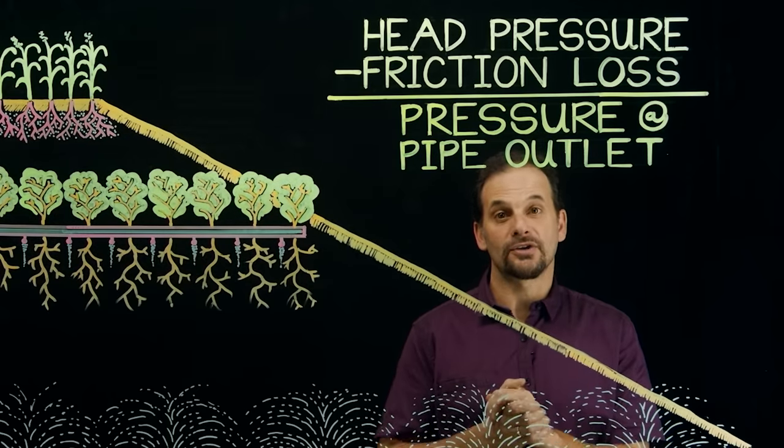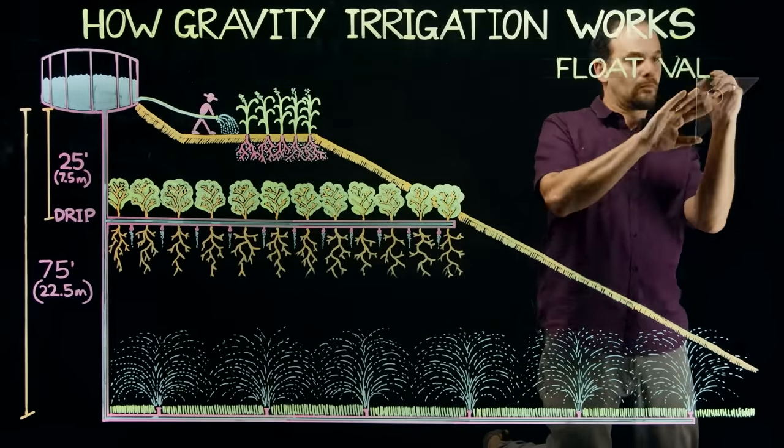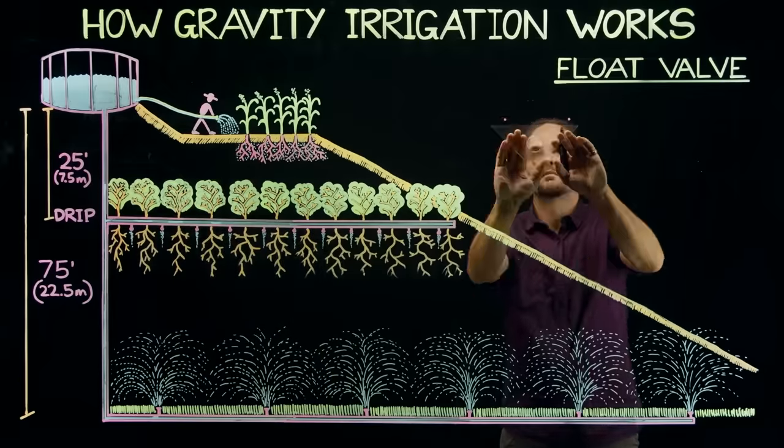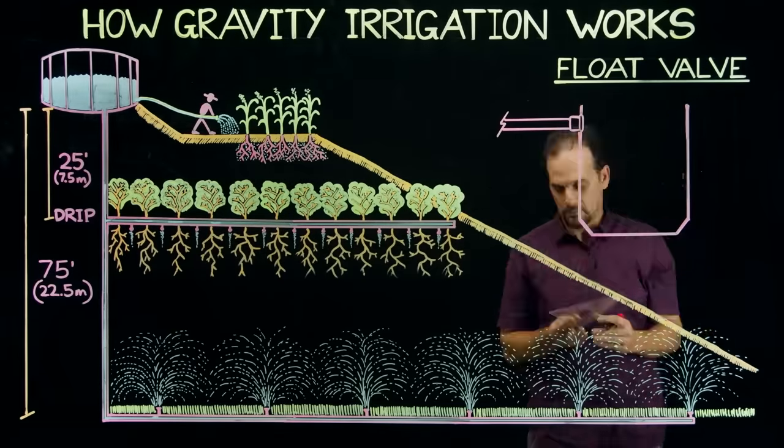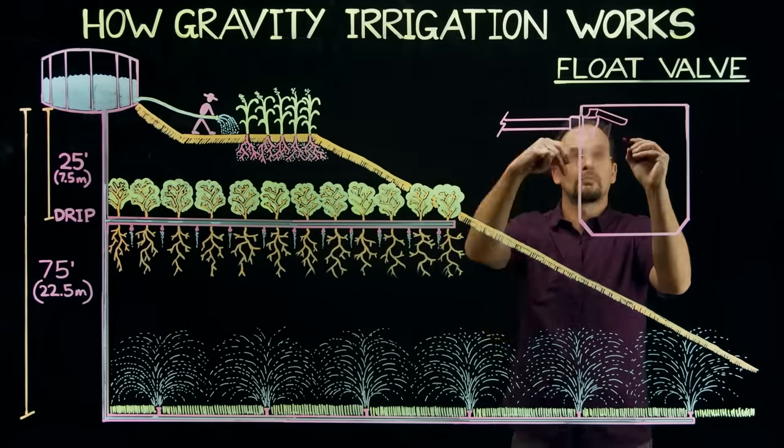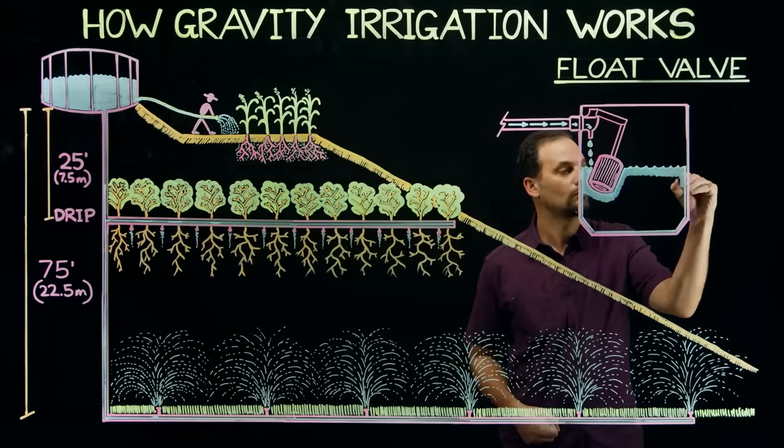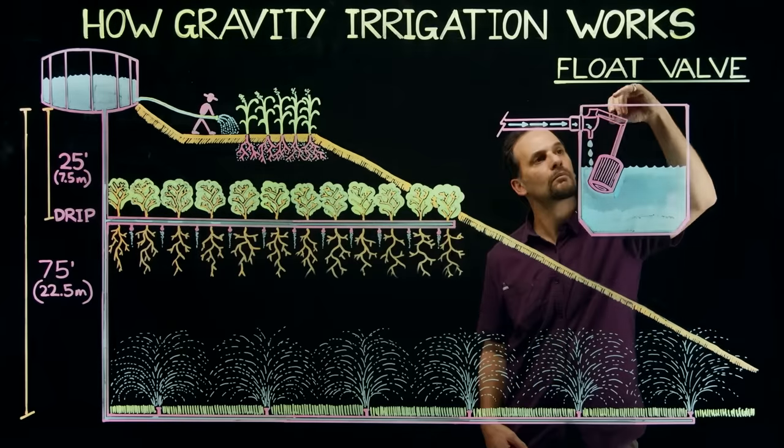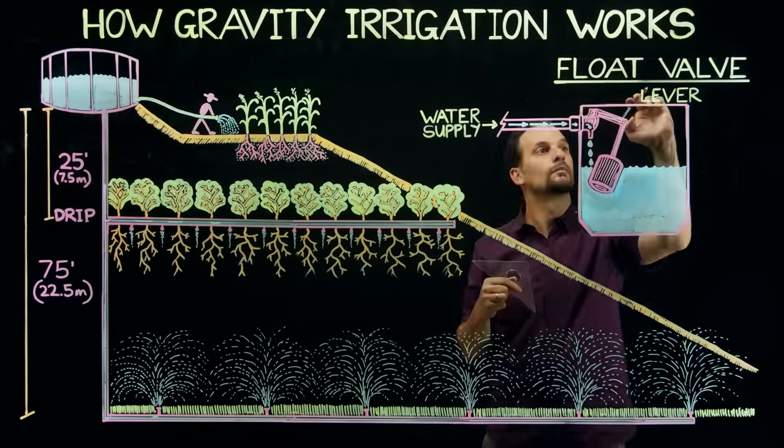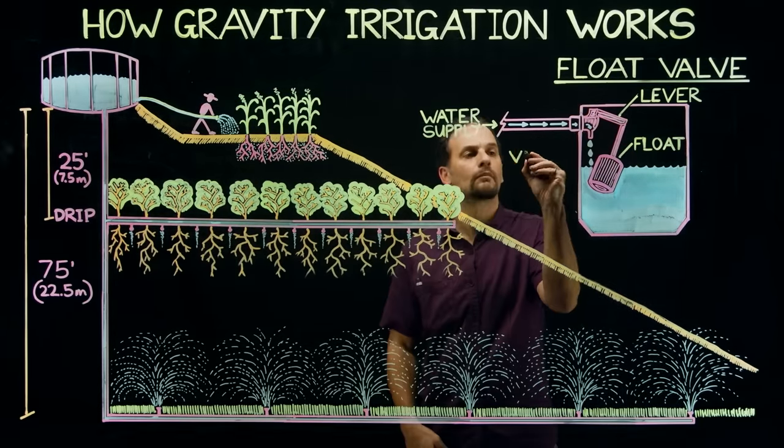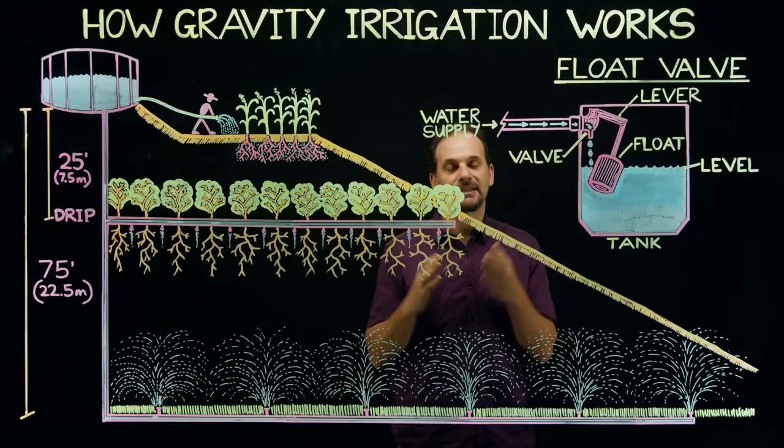There are other pieces of a gravity water system I want to share with you as well. The first one is called a float valve. A float valve allows you to keep a steady level of water in a trough or a tank using a float attached to a lever. When the water level goes down, the float lowers along with it and pulls down the lever, which opens a valve. When the valve opens, it refills the water and the float rises along with the water level, moving the lever and then closing the valve. So in that way, the water is always kept at a consistent level. This is really useful when you have a watering trough for animals because the water never runs out and is constantly refilled to a full level.